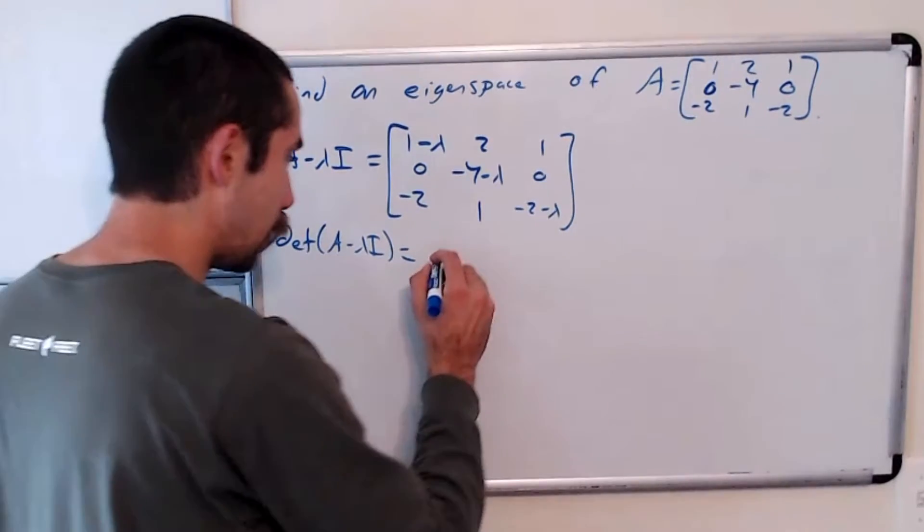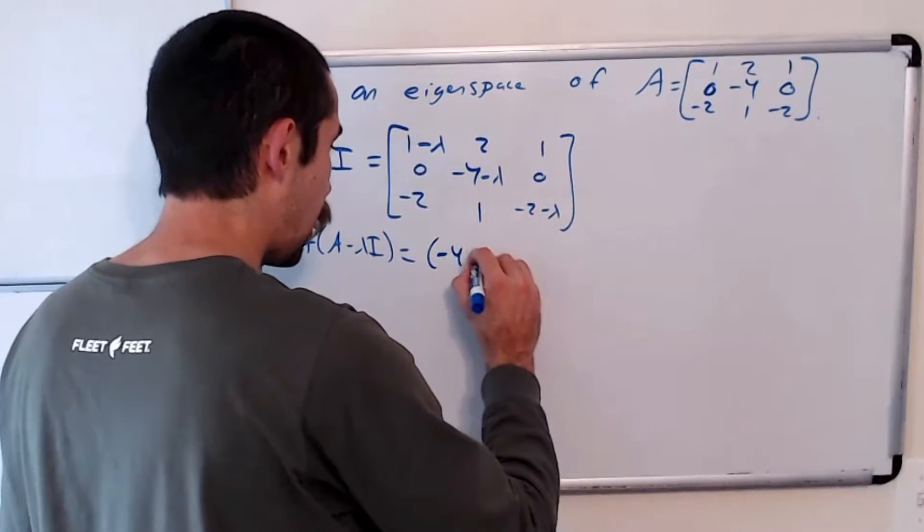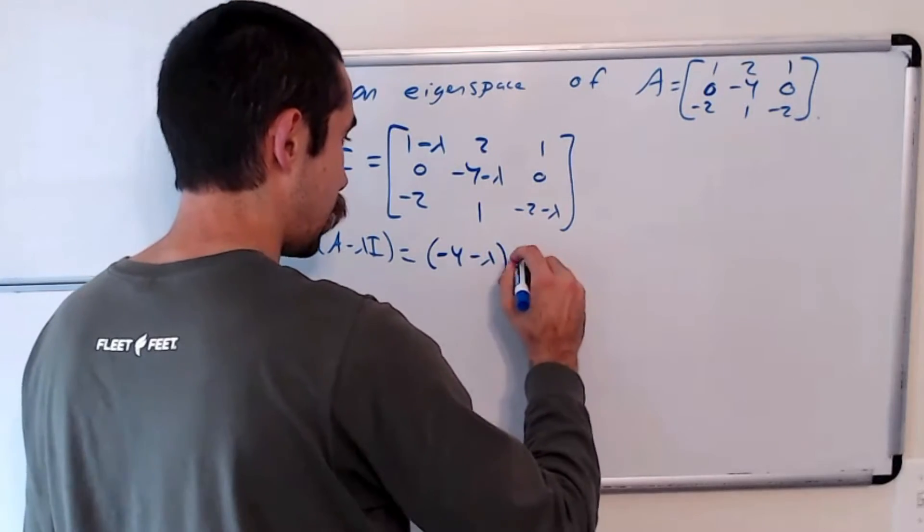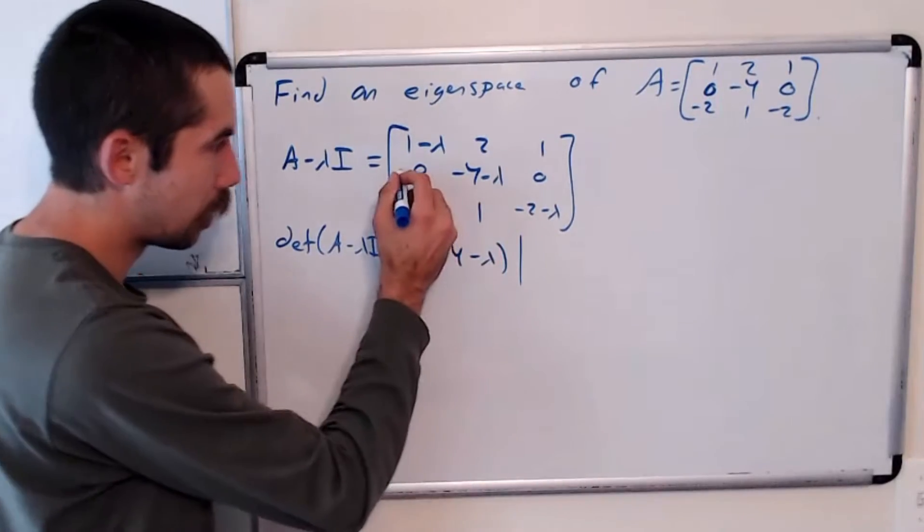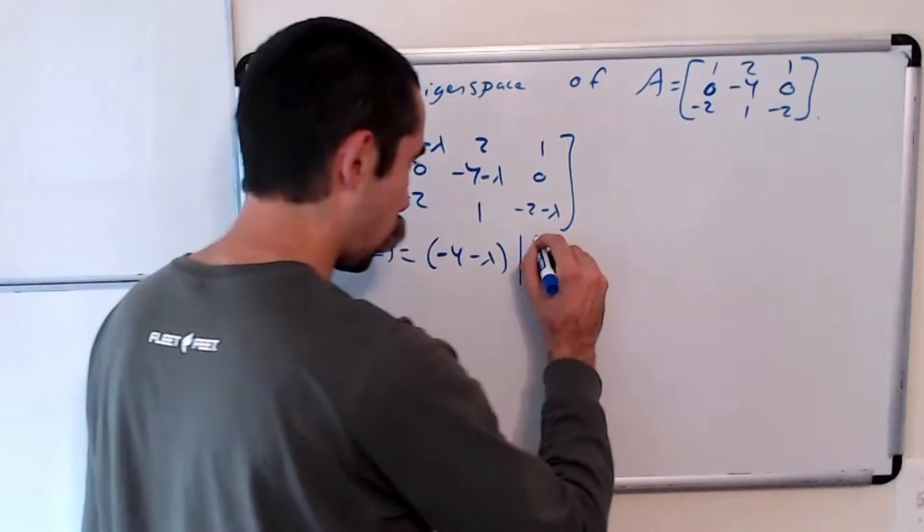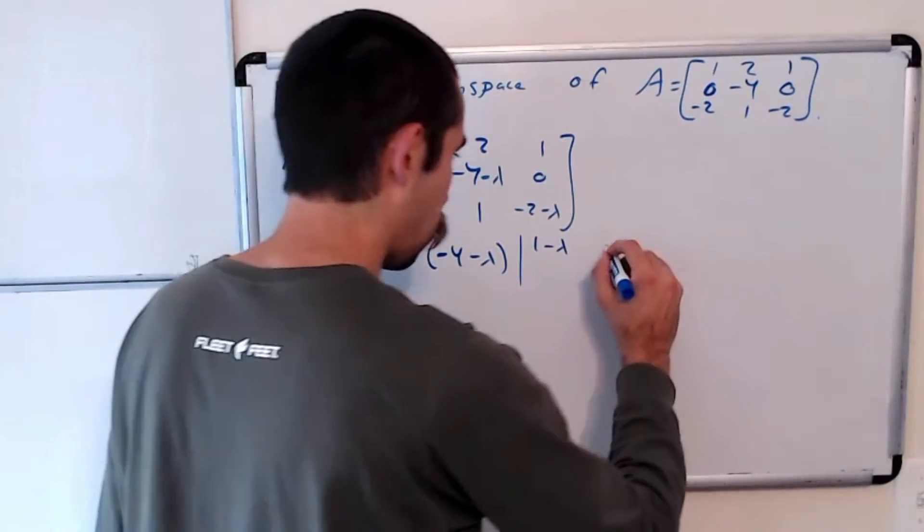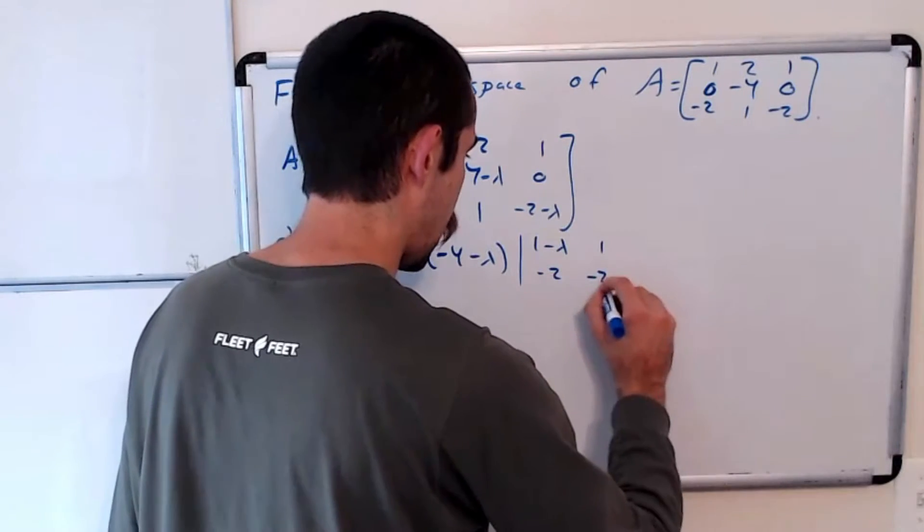That's going to be negative 4 minus lambda times the determinant of the 2 by 2 matrix you get by removing this column and this row, which is 1 minus lambda, 1, negative 2, negative 2 minus lambda.